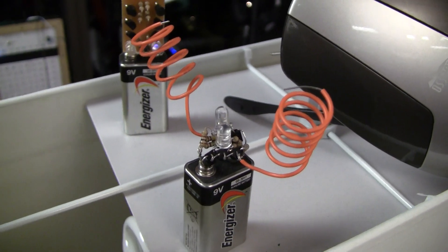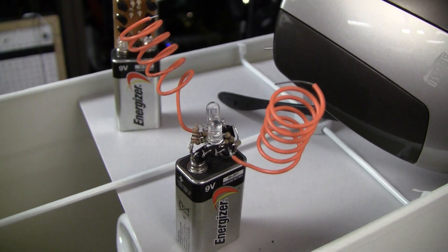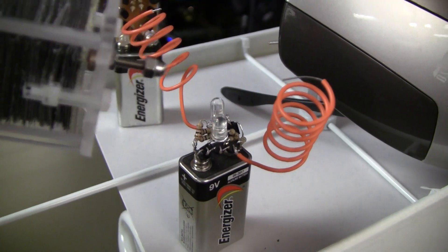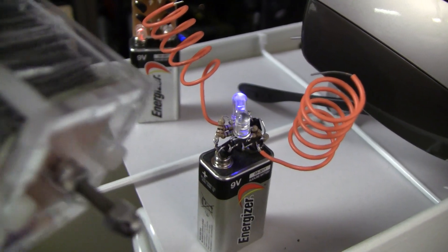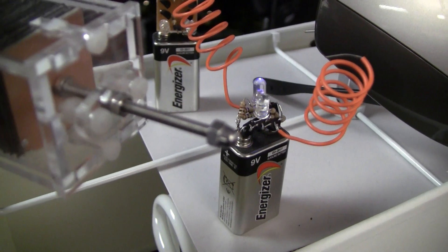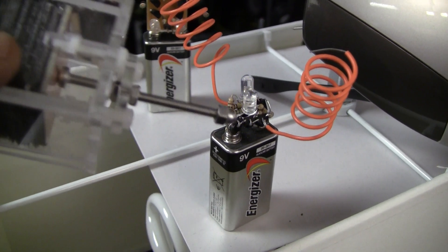Now if I hold the other end and approach it, the amber LED lights up, so there's definitely an electric field around the electroscope being generated by the dry pile.